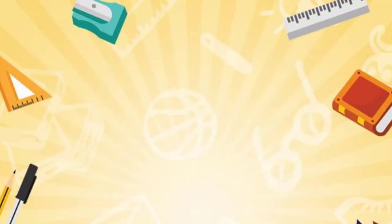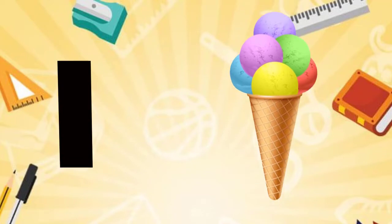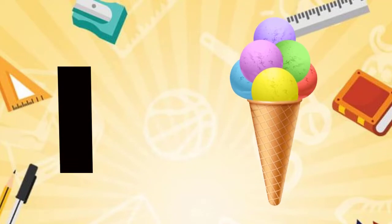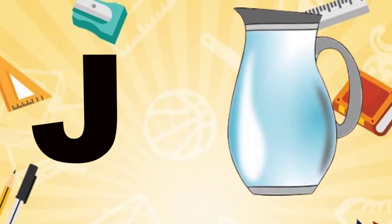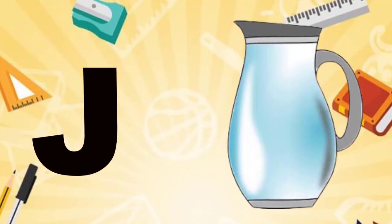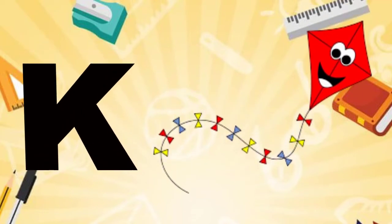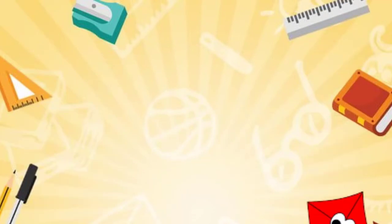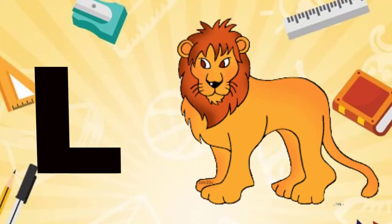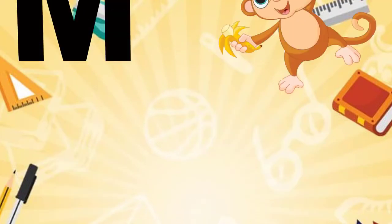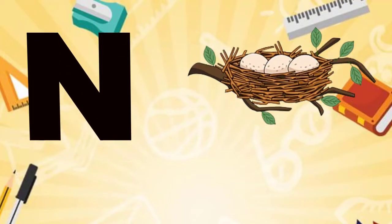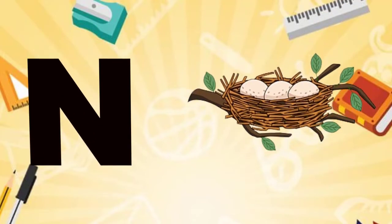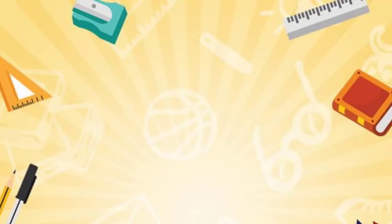H for hen, I for ice cream, J for jug, K for kite, L for lion, M for monkey, N for nest.